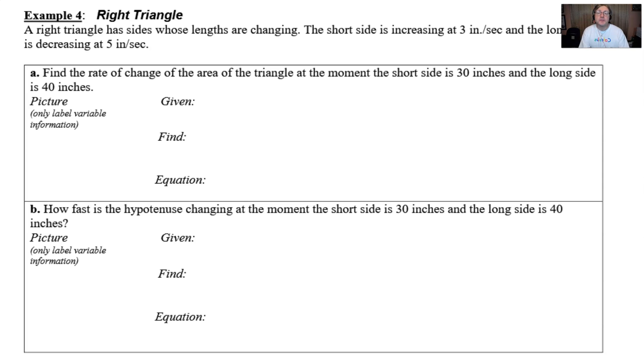As always, I'm working through a problem that is found within my notes packet, my guided practice that I give to my students. Example 4 says we have a right triangle that has sides whose lengths are changing. The short side is increasing at 3 inches per second and the long side is decreasing at a rate of 5 inches per second.